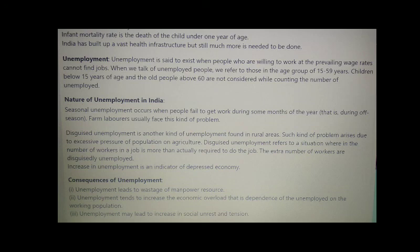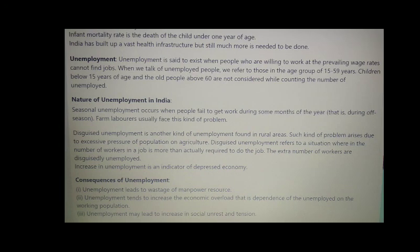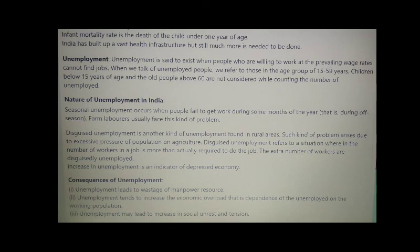Unemployment is said to exist when people who are willing to work at the prevailing wage rates cannot find a job. When we talk of unemployed people, we refer to those in the age group of 15 to 59 years. Children below 15 years of age and people above 60 are not considered while counting the number of unemployed. Seasonal unemployment occurs when people fail to find work during some months of the year, that is during off-season. Farm laborers usually face this kind of problem.